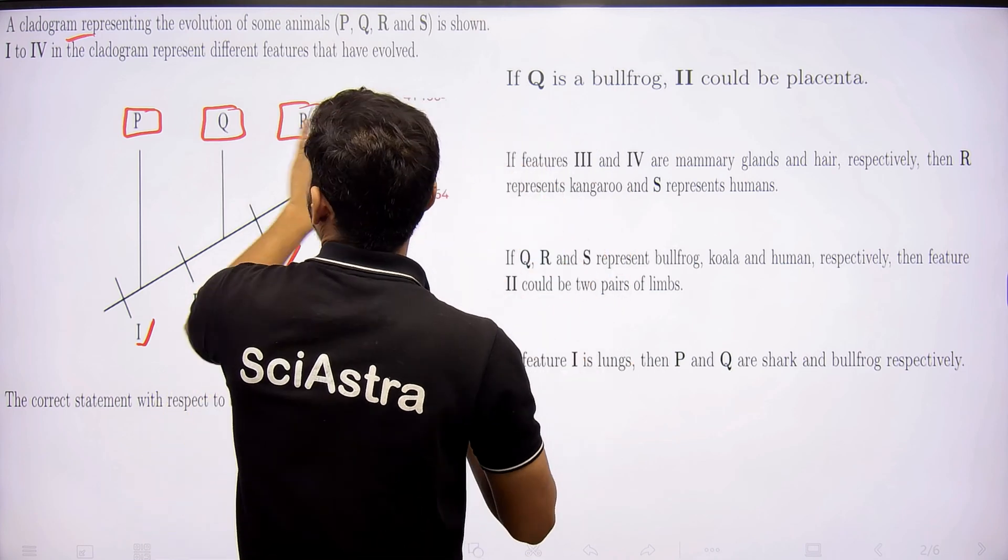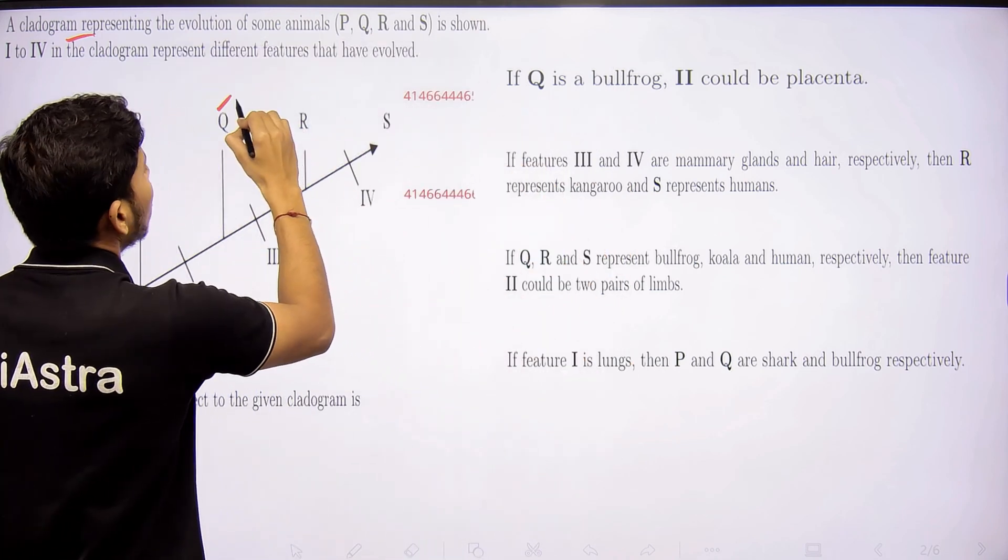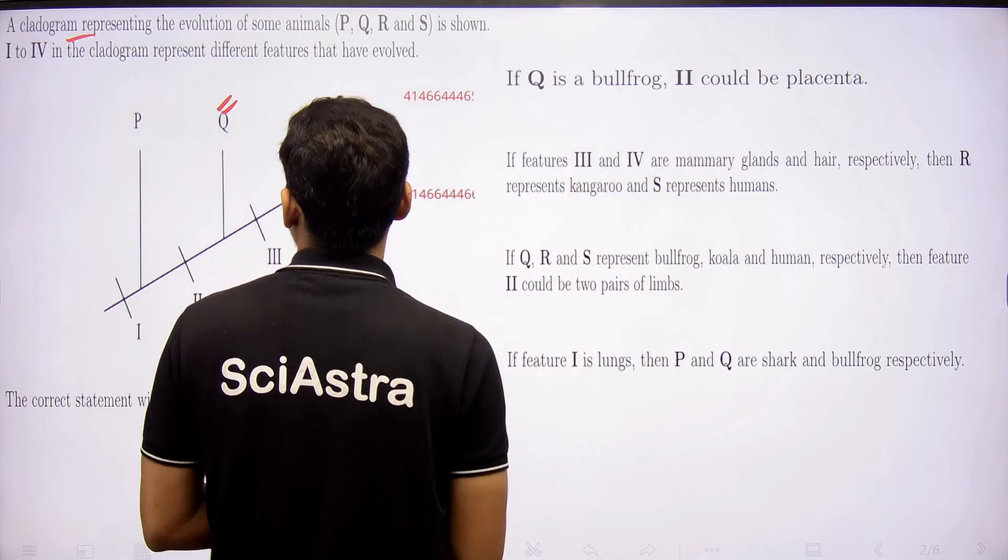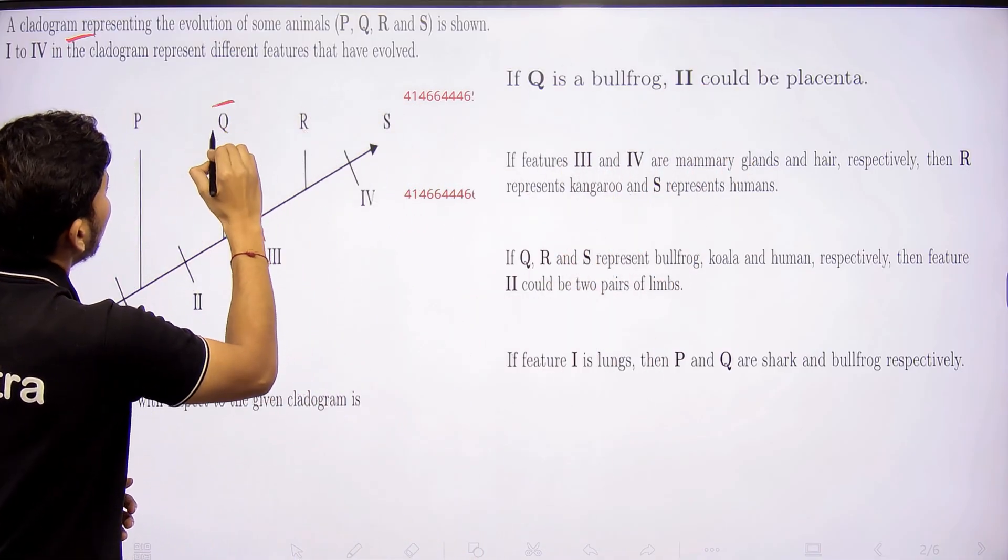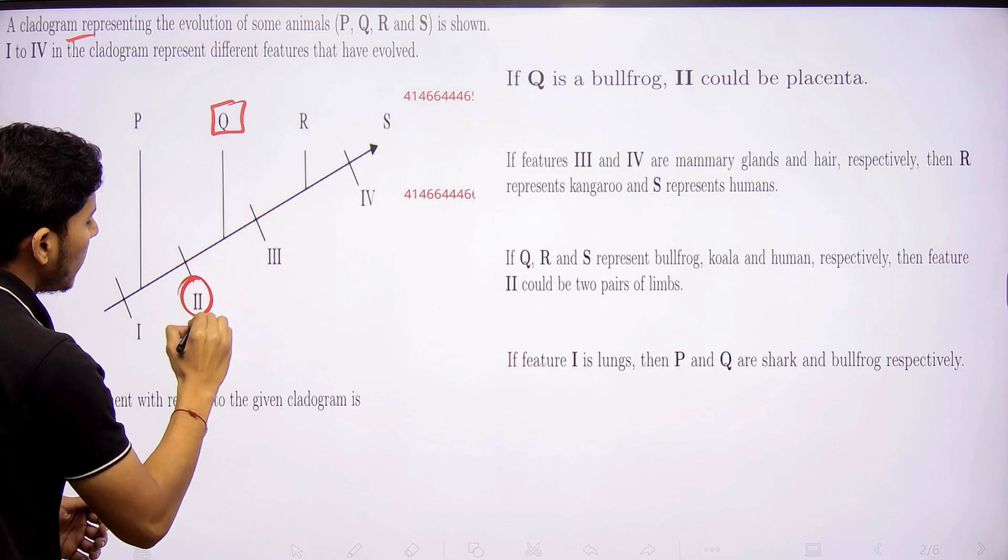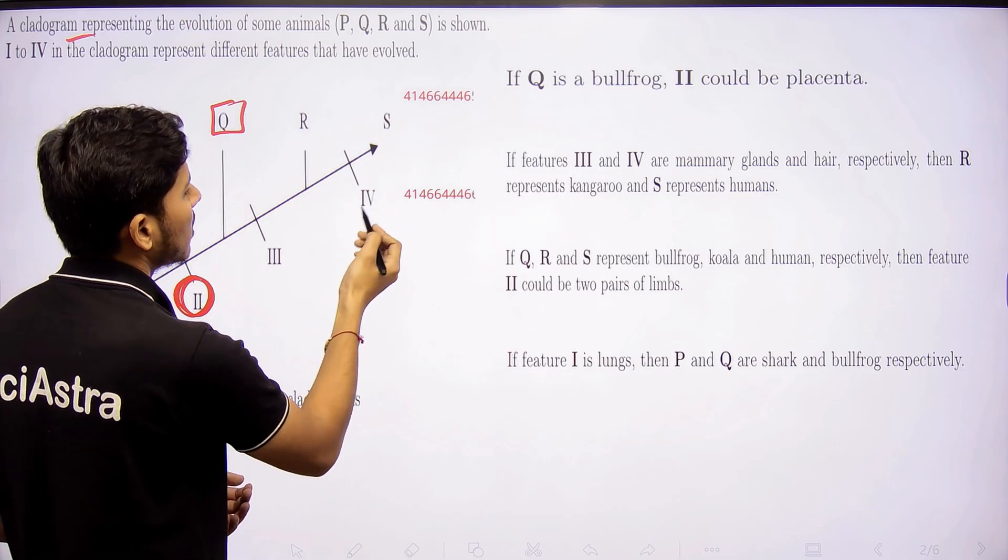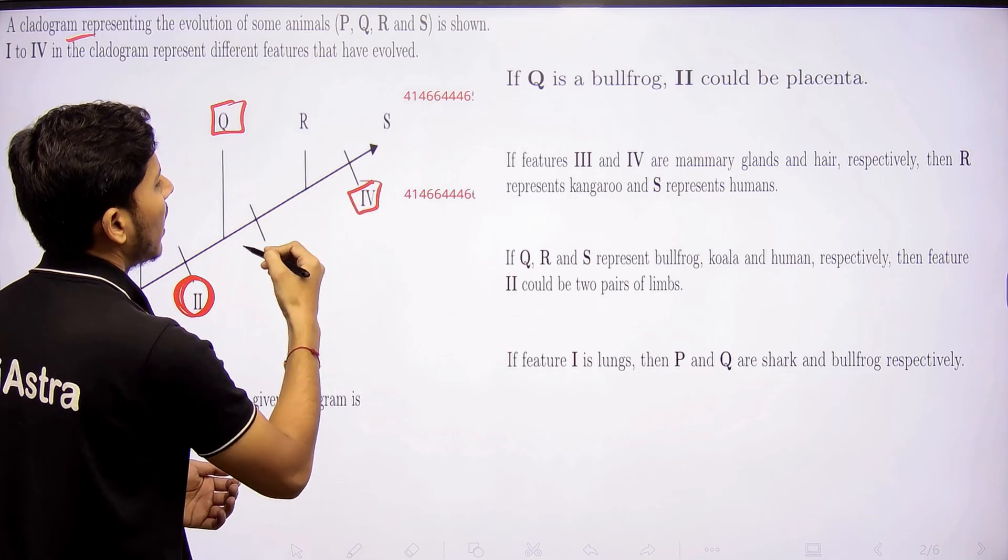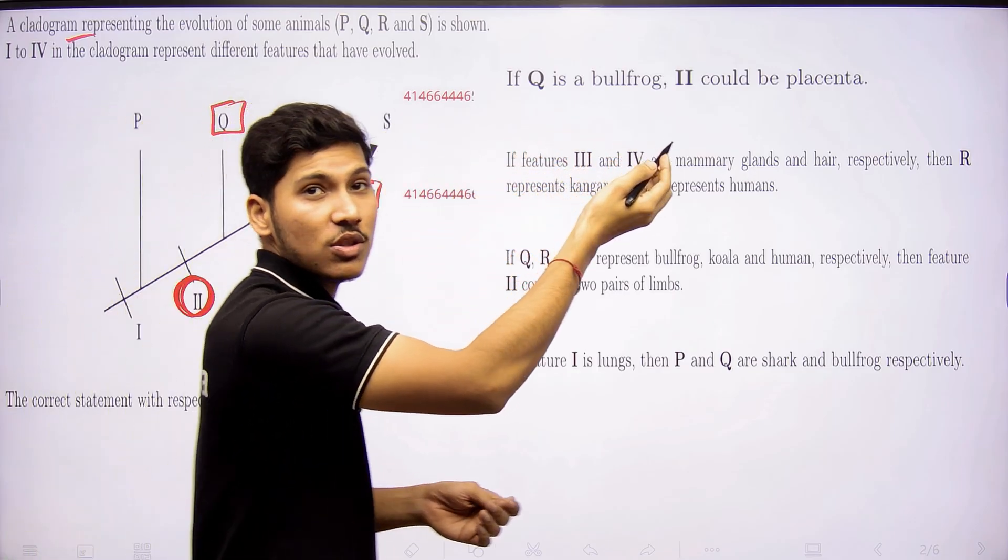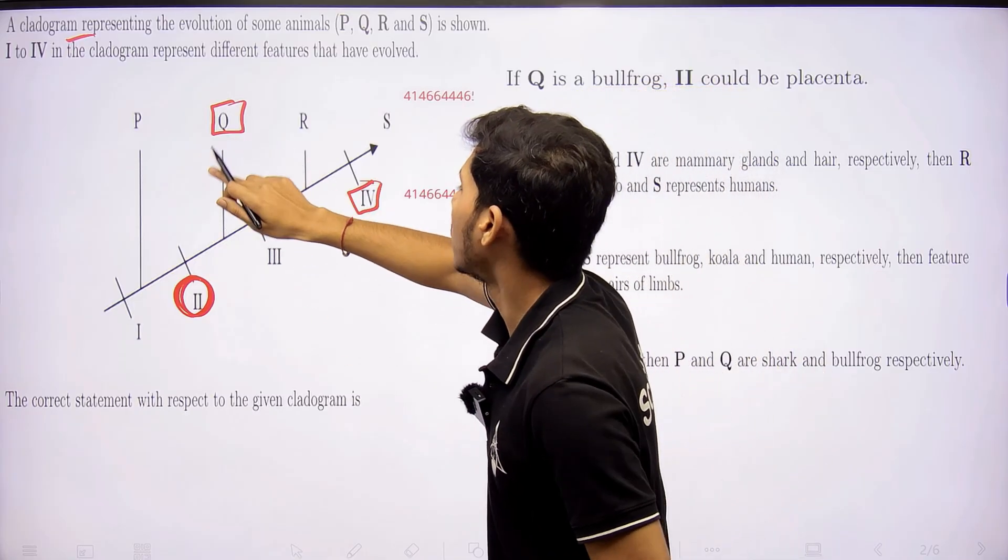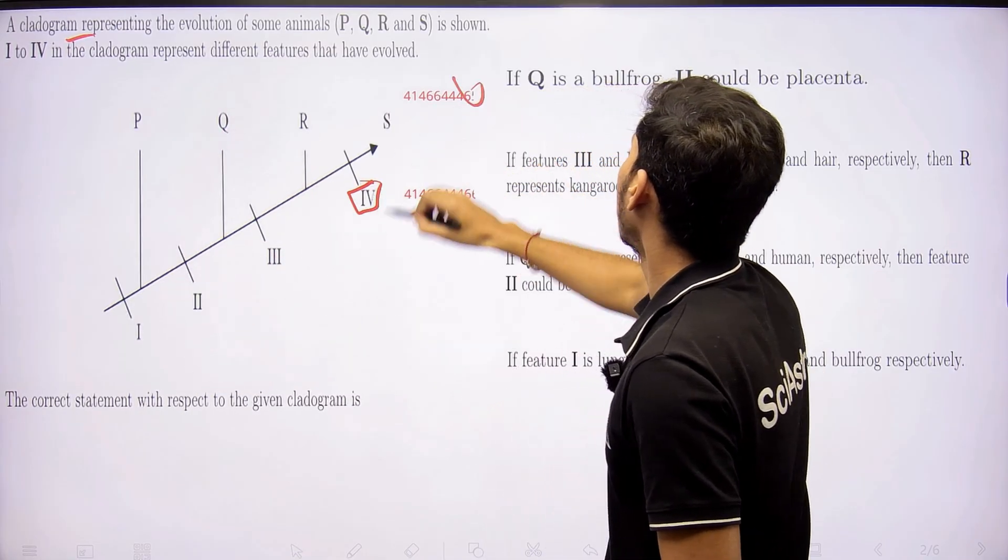If Q is bullfrog, 2 could be placenta. But we know that placenta is a characteristic of mammals. So it should be here. A bullfrog is not a mammal, so it should not contain placenta at all. That's why this statement is wrong here.